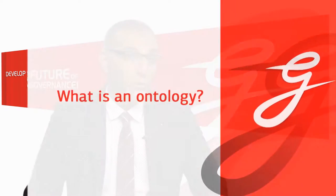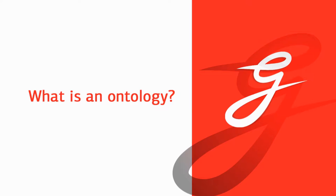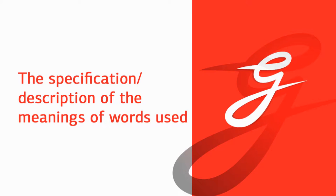What is an ontology? If you go to Google and ask what is an ontology, you will find something related to philosophy — the subject of existence. But we are not dealing with that. We actually mean an ontology as the specification or description of the meanings of the words we use in a domain, like the government domain.